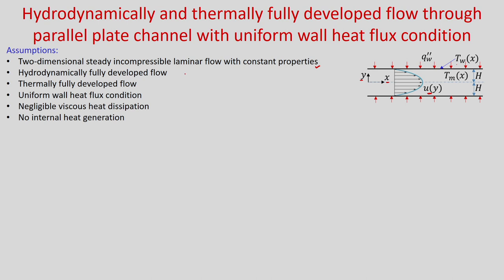For hydrodynamically fully developed flow, ∂u/∂x = 0 and v = 0. For thermally fully developed flow, we define the non-dimensional temperature φ = (T_w − T)/(T_w − T_m), where T_w is the wall temperature and T_m is the mean temperature. If it is thermally fully developed, then ∂φ/∂x = 0. For uniform wall heat flux, q″_w is constant. We also assume negligible viscous heat dissipation (φ = 0) and no internal heat generation (q‴ = 0).